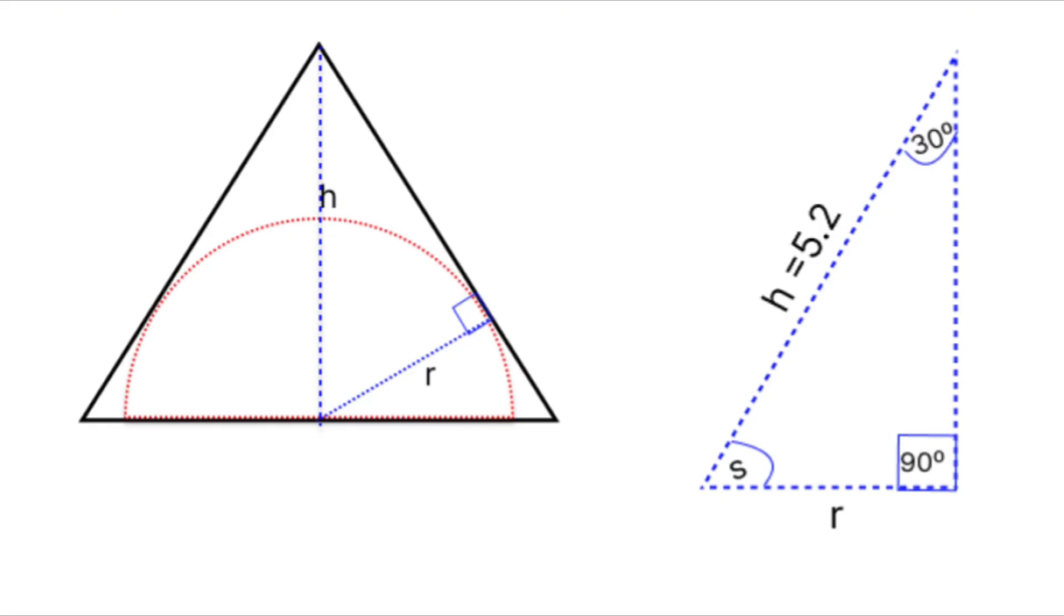We've got the radius, which we'll call R. And we're also working with some angle geometry coming from the top angle of the triangle, which is 60 degrees. Now, here's the good news. This is the perfect time to bring in a little bit of trigonometry.